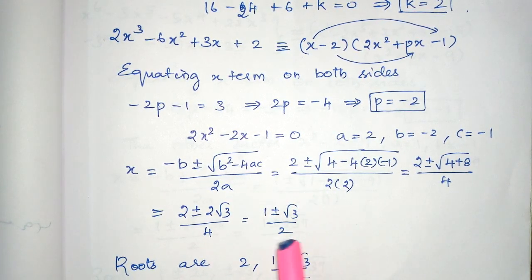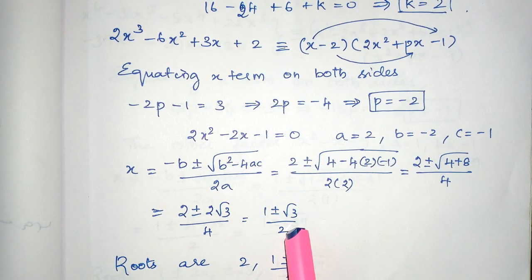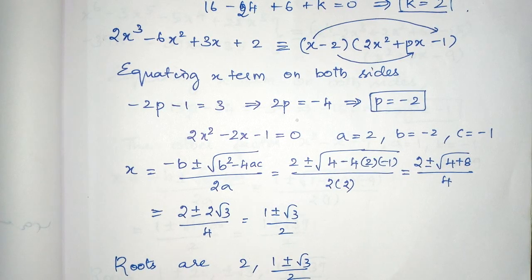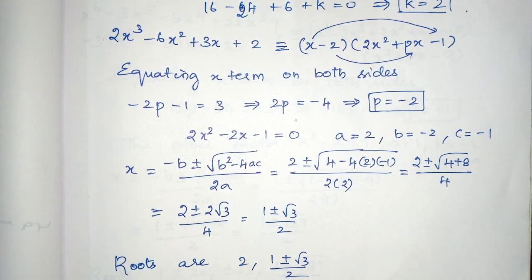So, here we have got 2 roots. Already we have got a root 2. So, here also 2 roots. So, totally 3 roots. So, the roots are 2 comma 1 plus or minus root 3 by 2. Thank you.